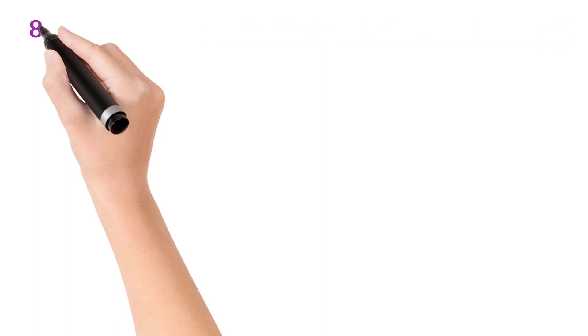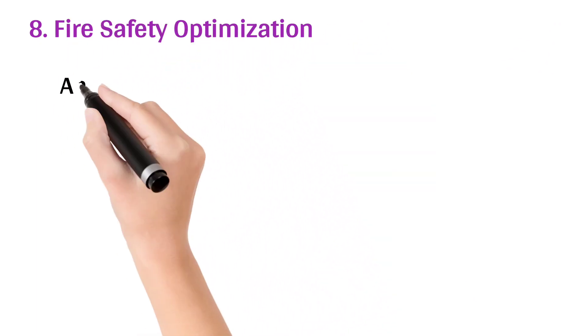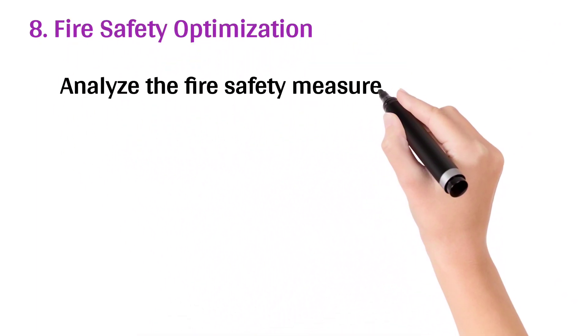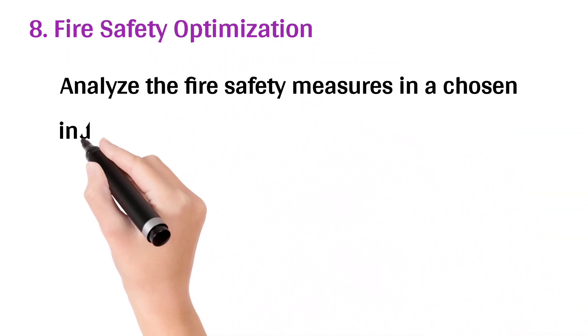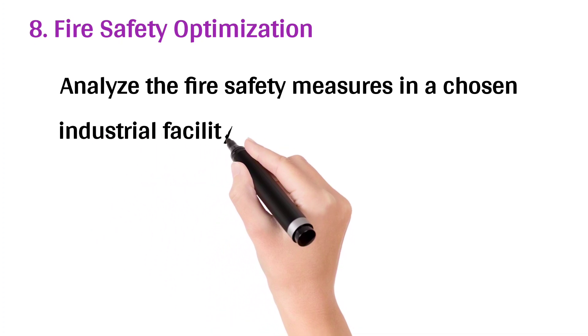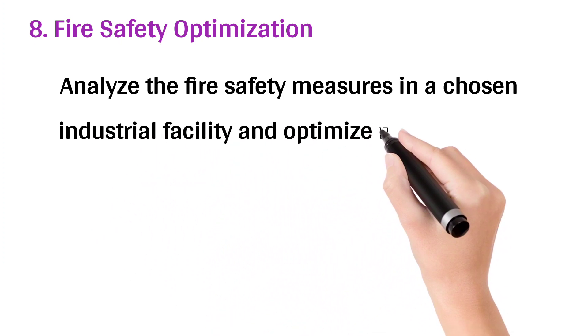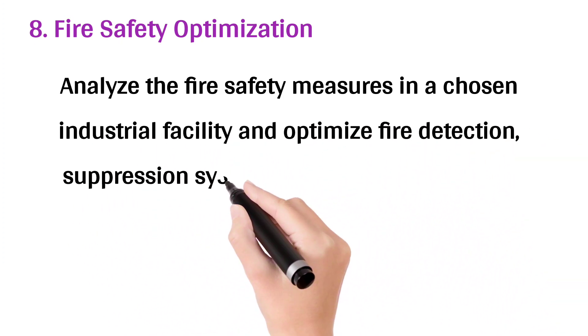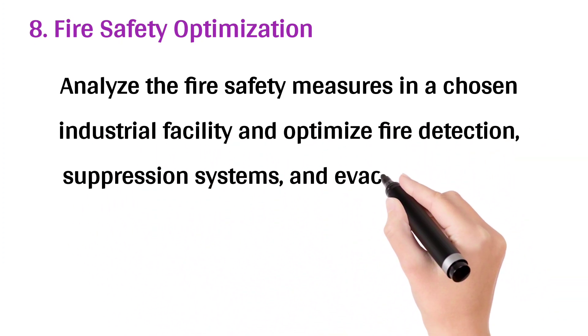8. Fire safety optimization: analyze the fire safety measures in a chosen industrial facility and optimize fire detection, suppression systems, and evacuation plans.